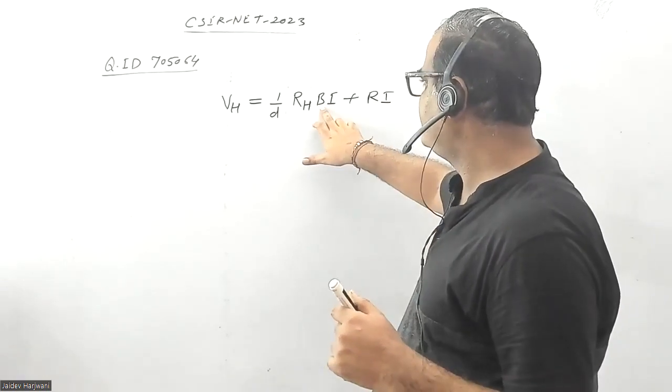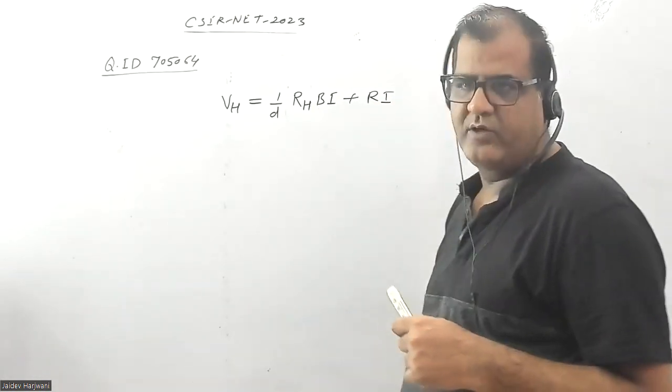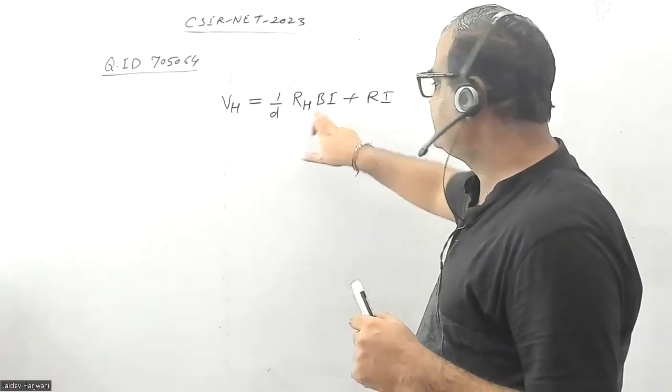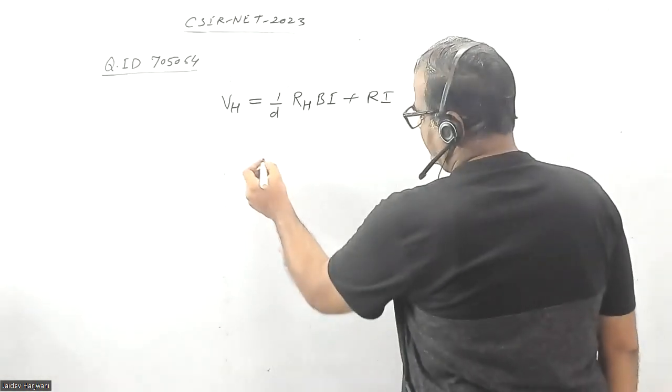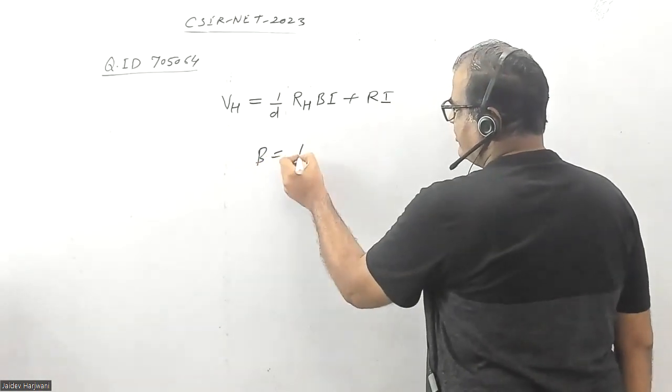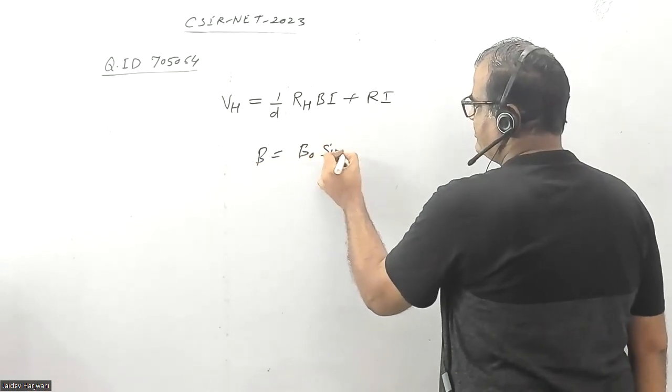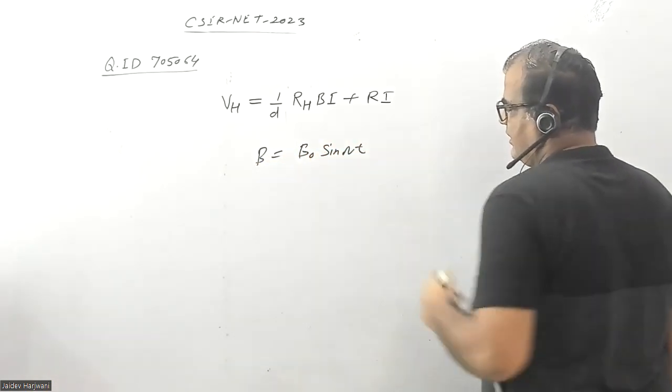In this question, B is varying sinusoidally, given as B = B_0 * sin(ωt), and you're using a lock-in detection technique.